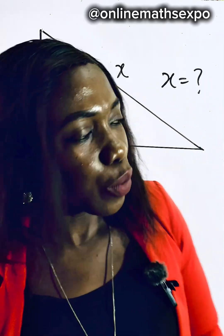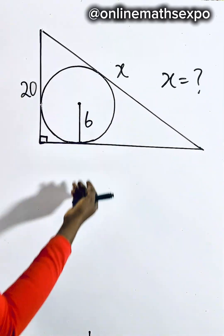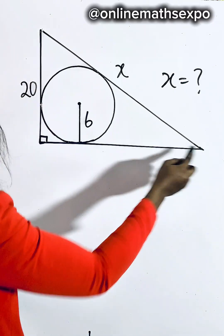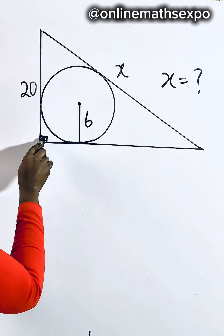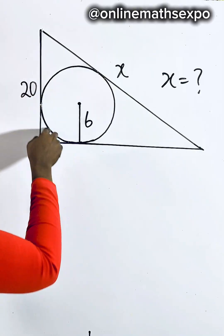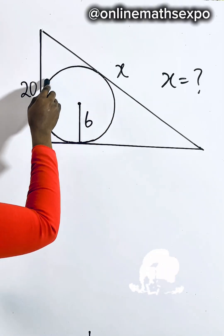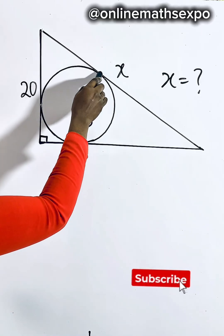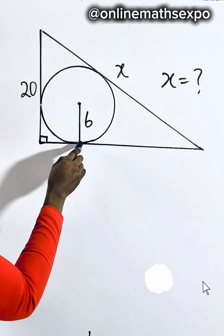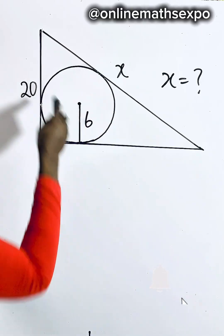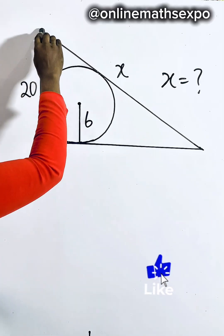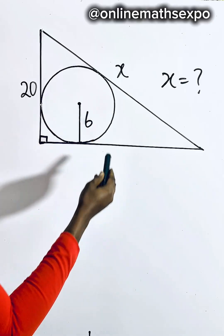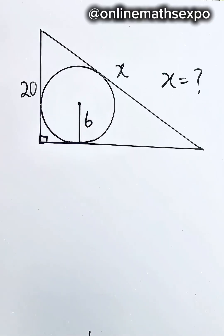Hello and welcome. We have this beautiful geometry challenge on the board. We are given a right triangle — you can see the right angle here — and inscribed is a circle such that the outer part of this circle, which we call the circumference, is touching this triangle at this point. From here to here is given as 20 units, from here to here is given as x, and from here to here is 6. We want to find the value of x.